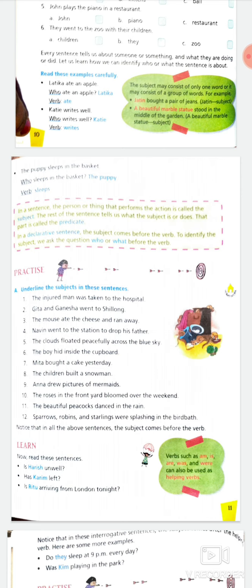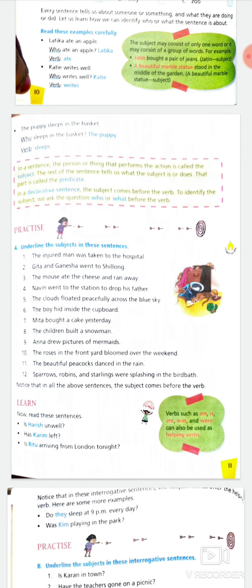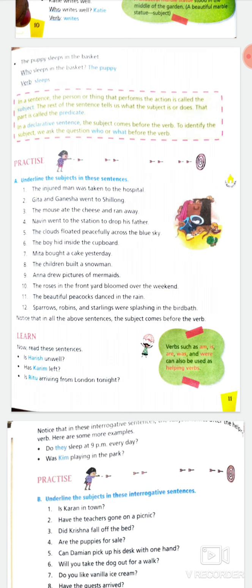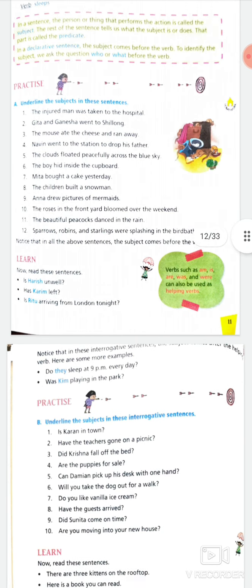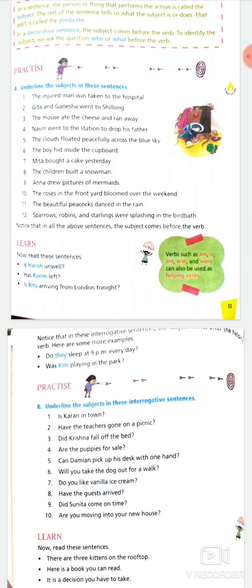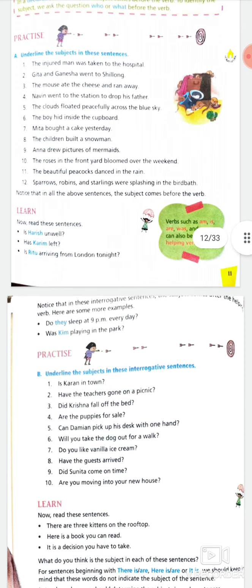Fourth: 'Navin went to the station to drop his father' — Navin is the subject. Fifth: 'the clouds floated peacefully across the blue sky' — the clouds is the subject. Sixth: 'the boy hid inside the cupboard' — the boy. Seventh: 'Mita bought a cake yesterday' — Mita. Eighth: 'the children built a snowman' — the children. Ninth: 'Anna drew pictures of mermaids' — Anna. Tenth: 'the roses in the front yard bloomed over the weekend' — the roses.